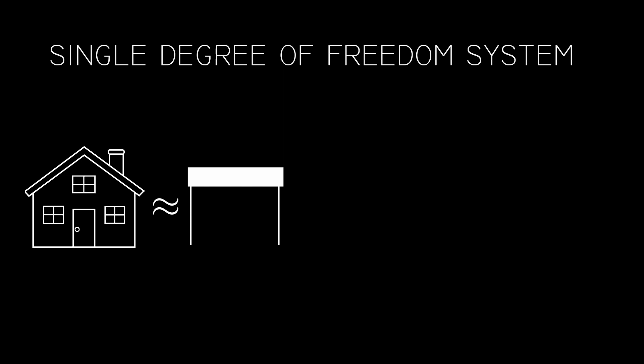To simplify things, we can assume that all of its mass is concentrated in the ceiling and the ceiling itself is infinitely stiff. The second assumption is not really necessary, but it makes calculating the bending stiffness just a bit easier. Then, this becomes equivalent to two cantilevers rotationally fixed on both sides, or a single one with double the stiffness, denoted by K.